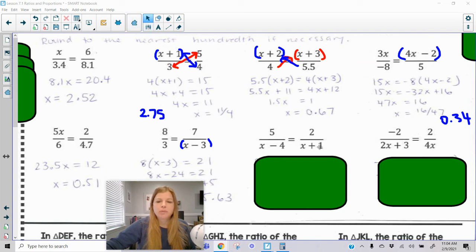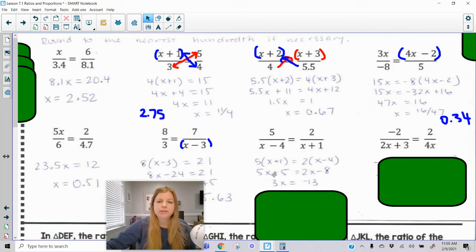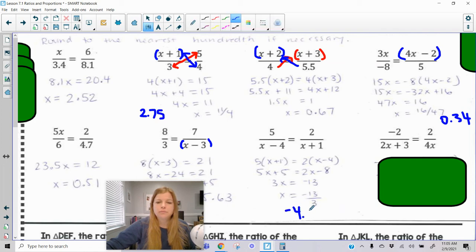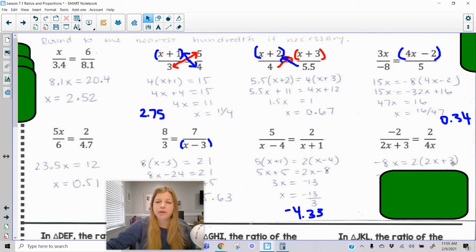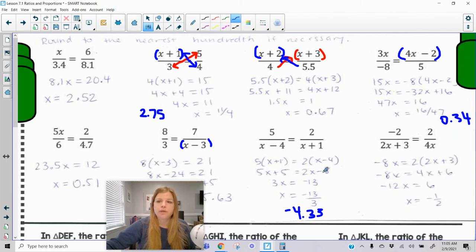Last two. So 5 gets multiplied by x plus 1, 2 gets multiplied by x minus 4. Use my distributive property, start to solve. I subtracted 2x, subtracted 5, and I get x equals negative 13 thirds, which is negative 4.3 repeating. And then this last one, negative 2 times 4x is negative 8x, and then 2 times 2x plus 3. We end up getting negative 1.5, which of course is negative 0.5. So that's solving proportions.